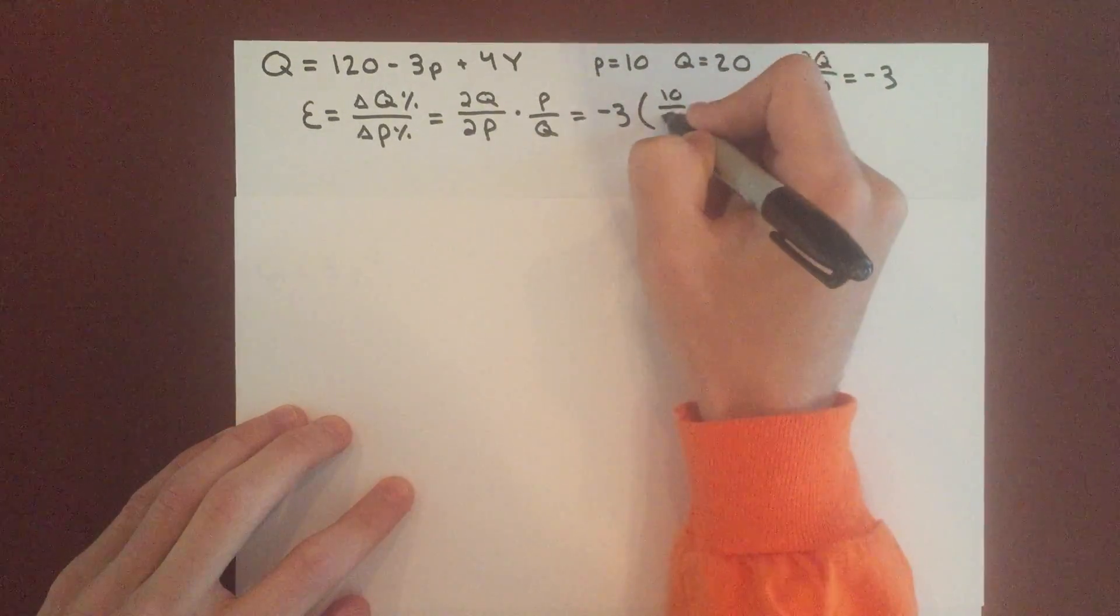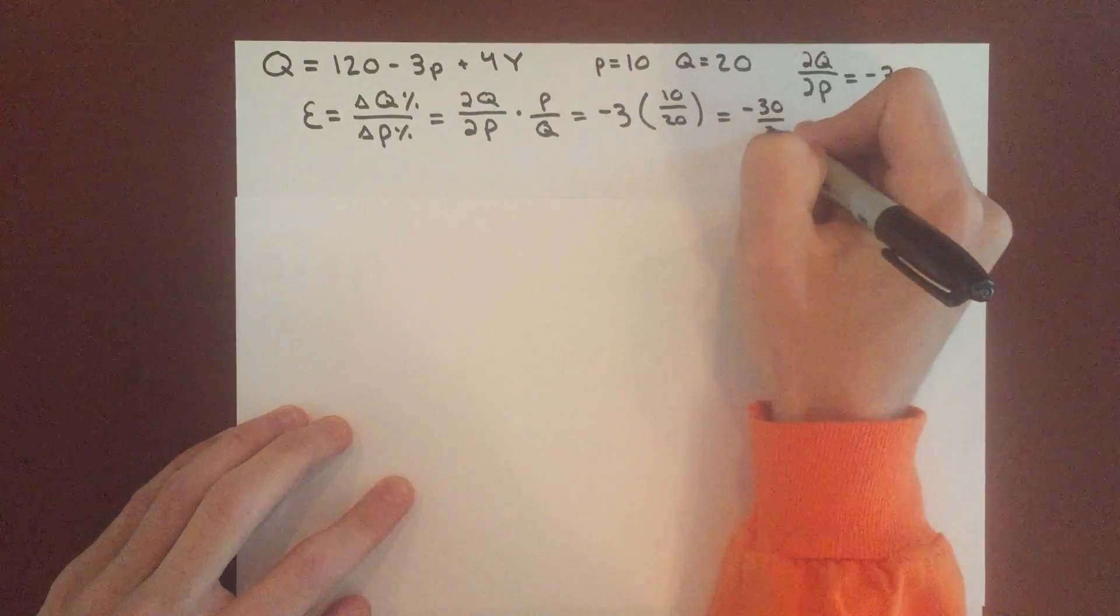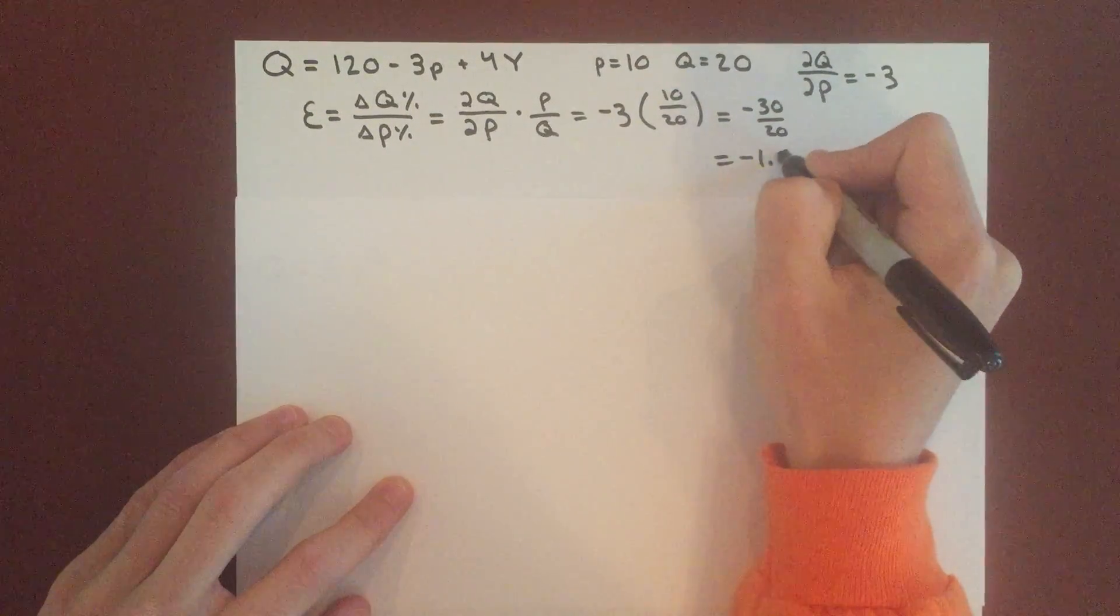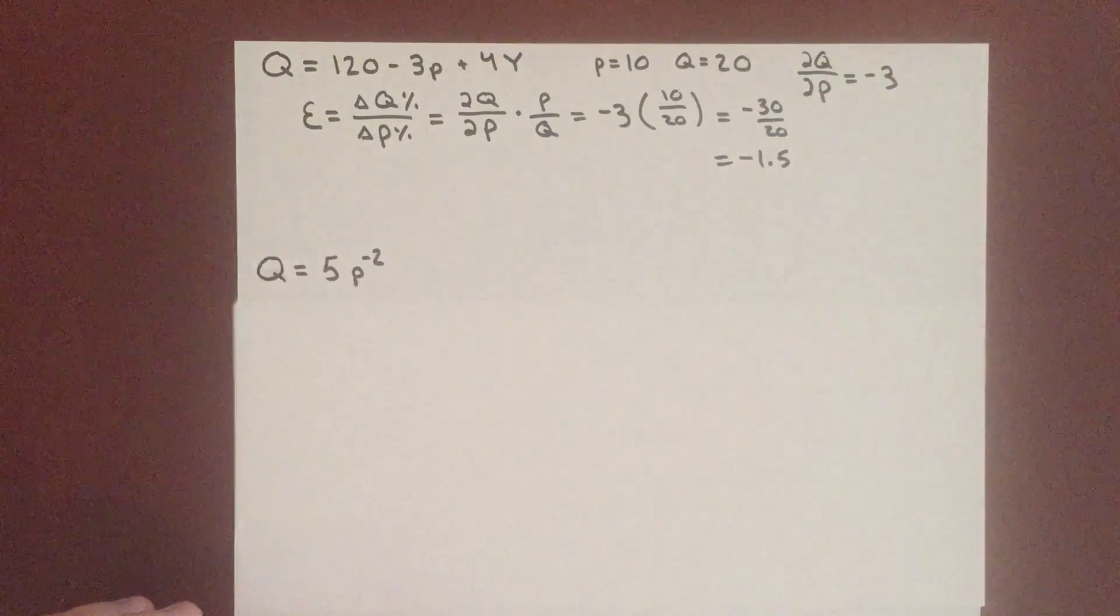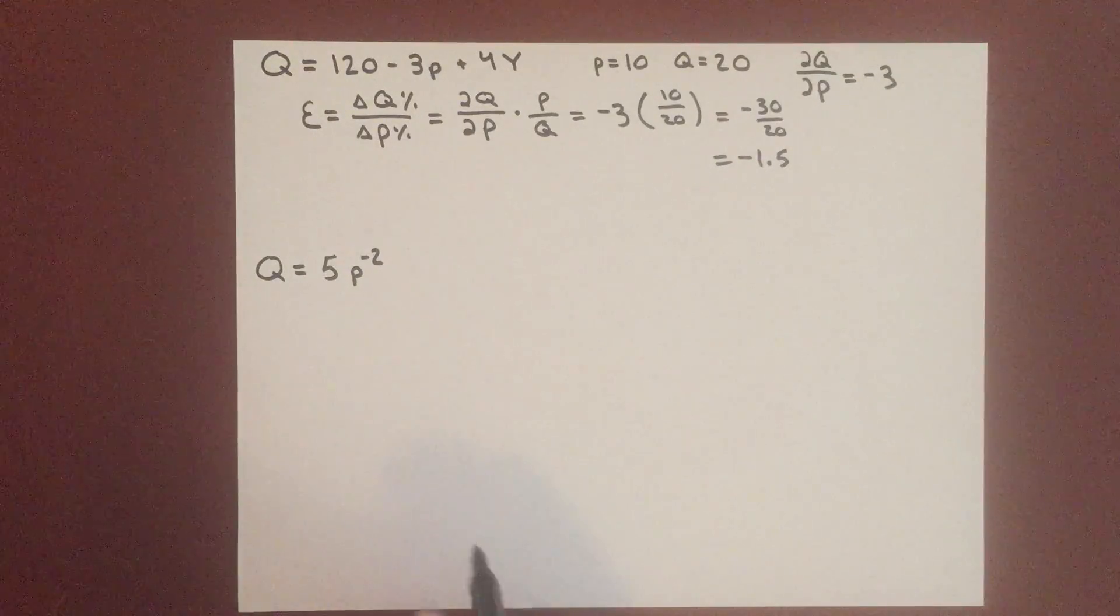10 over 20, and this equals negative 30 over 20, which reduces to negative 3 over 2, or negative 1.5. So we have a slightly elastic demand curve in that situation. Then we can also do this second example